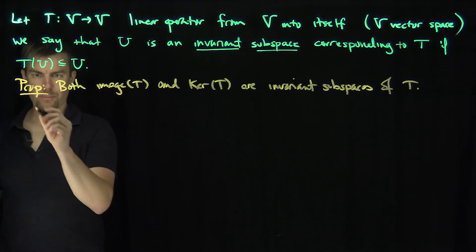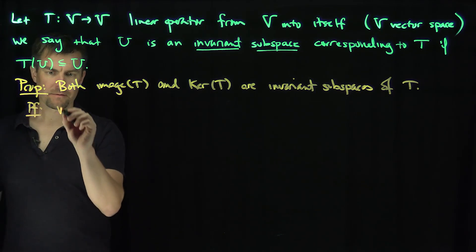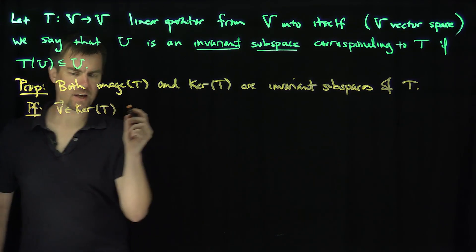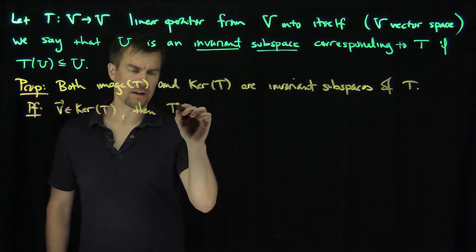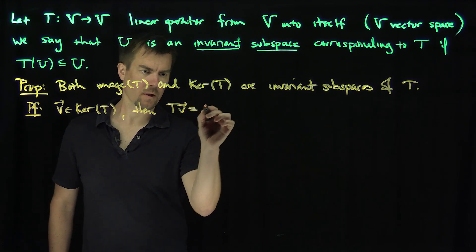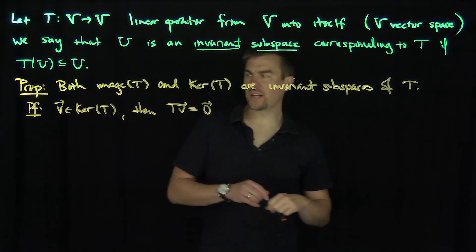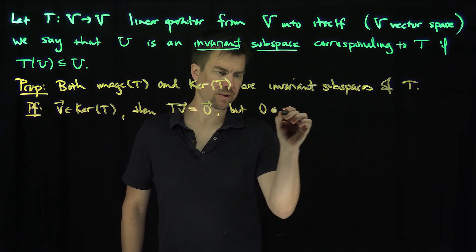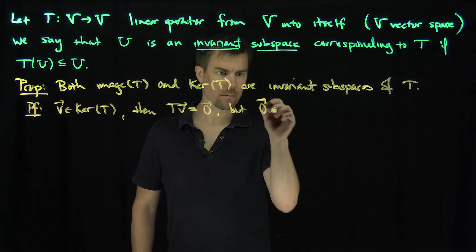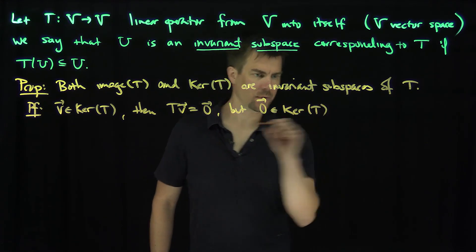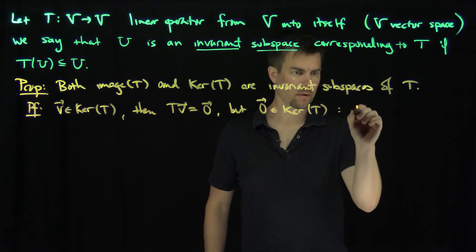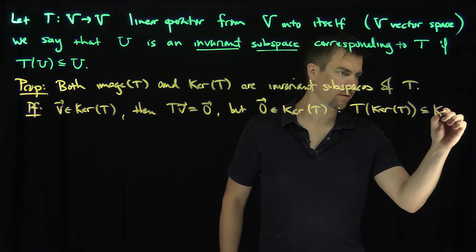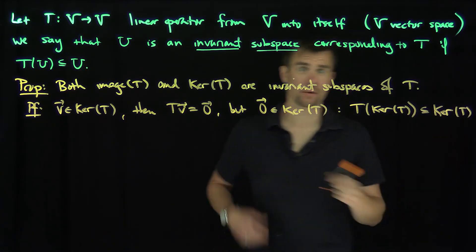Of course, the proof is straightforward. Proof: if v is in the kernel of T, then Tv is equal to zero. And so T maps this element v to zero, but zero is always in the kernel of T. And so that says that T takes the kernel of T into the kernel of T. In particular, it just takes it straight to zero.